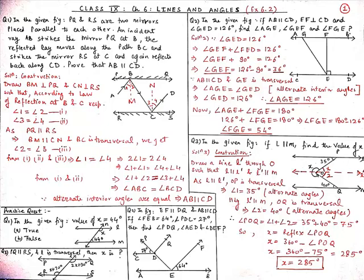Since PQ is parallel to RS and by construction BM is parallel to CN, where BC is the transversal. From here, angle 2 will be equal to angle 3.